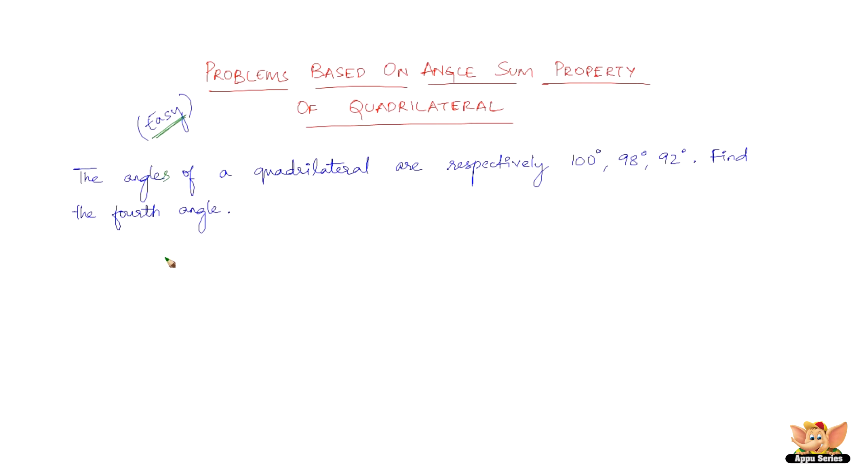Let us consider the fourth angle to be x degrees. We know that the sum of the four angles of a quadrilateral equals 360 degrees.